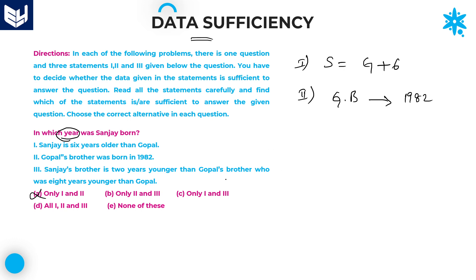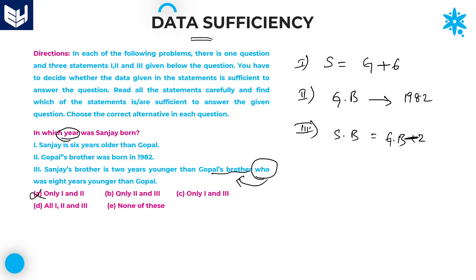Coming to statements 2 and 3: statement 3 says Sanjay's brother is 2 years younger than Gopal's brother. And the information about Gopal's brother: Gopal's brother was 8 years younger than Gopal. It means the gap between Gopal and Gopal's brother is 8 years.